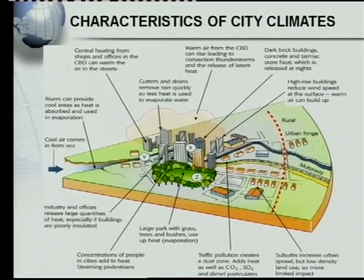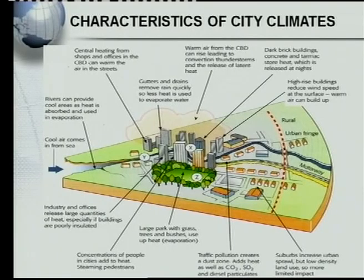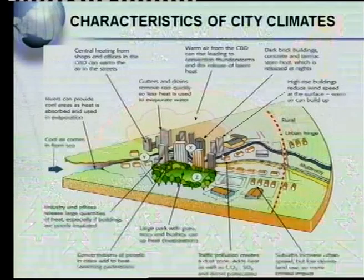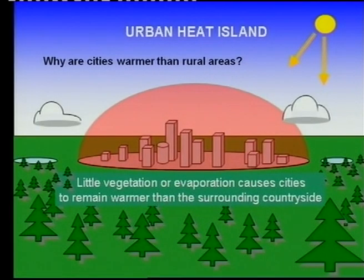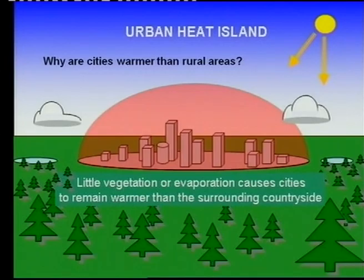This is what the city looks like. Now, if you look at the rural areas, the first thing you notice is no buildings — very few high buildings, very few tarred roads. In other words, we are going to have a cooler rural area and a warmer city. And that is called a heat island. The reason why it's called a heat island is the city is warm, just like an ordinary island — a piece of land totally surrounded by water. Here we've got an island of heat: the city that is completely surrounded by a cooler area called the rural area.